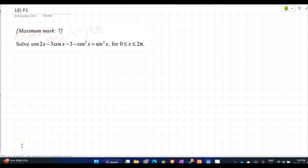What you need to do is apply all the identities and try to get everything either in terms of sine or in terms of cos. So what would be better? You want in terms of cos? Yeah, so it's fine now.